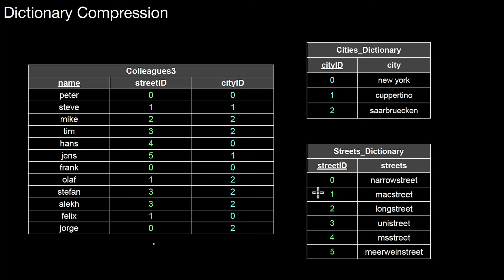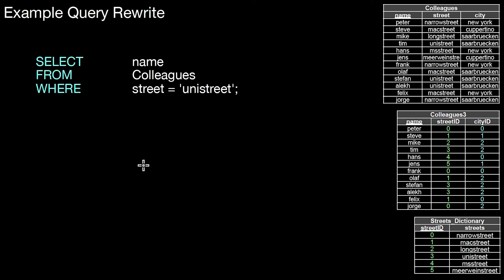Assume a situation where you're interested in one specific tuple and you want both values — then you have to perform two joins: one with the streets dictionary and one with the cities dictionary. However, there's another advantage: the database system can exploit this more efficient representation for query processing. This is based on views. Assume we have a simple query selecting only the name from the table for employees that live on Uni Street. We replaced Uni Street with street ID 3, so the original where condition cannot be applied anymore, as we replaced the string with the integer 3.